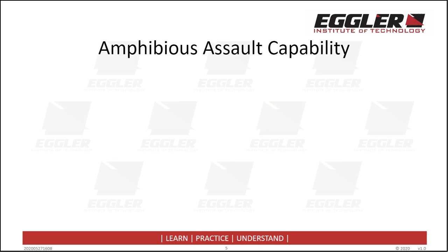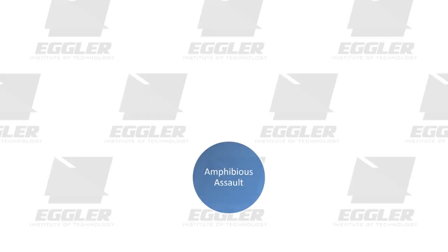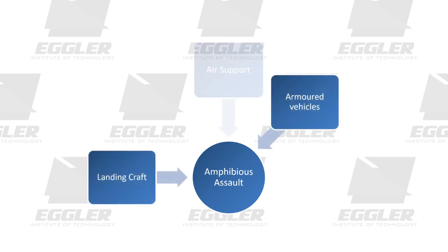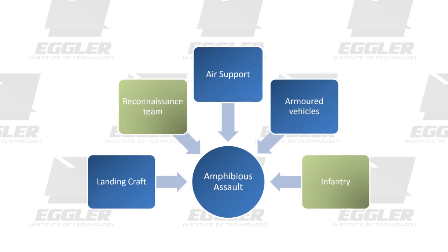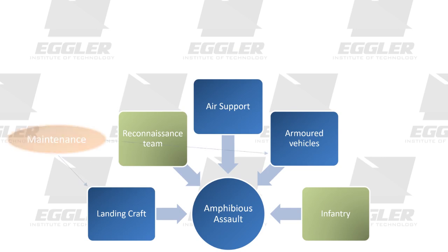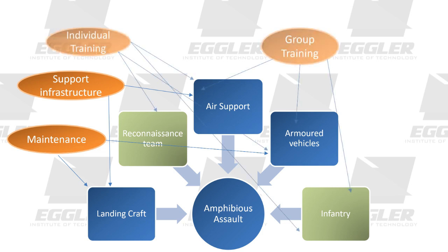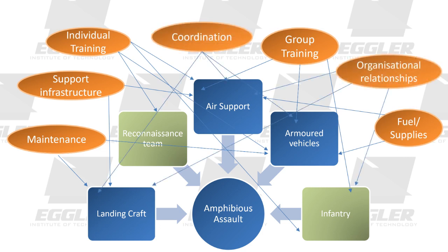Another example of a complex system made up of a broad range of fundamental inputs to capability is that of an amphibious assault capability. In this example, the operational effect of amphibious assault is delivered by a combination of major systems that include landing craft, armoured vehicles, air support, dismounted infantry, and a beach landing reconnaissance team — the mission system. To raise, train, and sustain the amphibious assault capability requires a broad range of external support systems covering maintenance and support infrastructure, various types of training, and a complex array of processes and procedures that deliver the required coordination and organizational relationships.